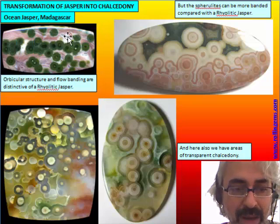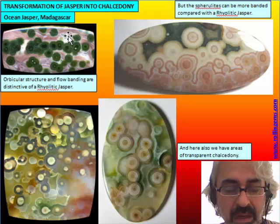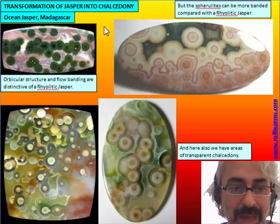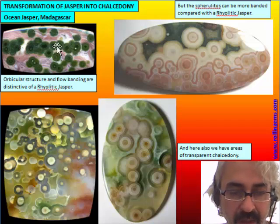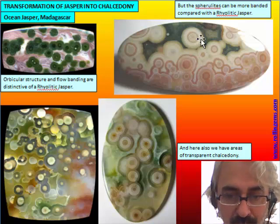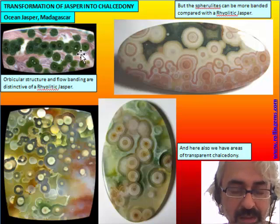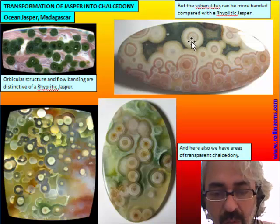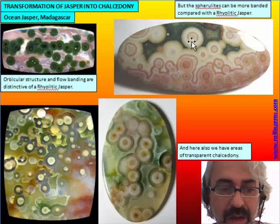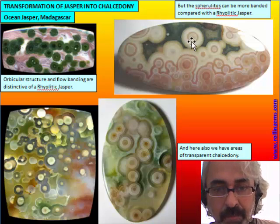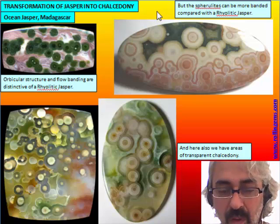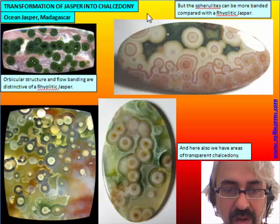The two structures give us the history of its formation from the emplacement of the lava flow and through its devitrification. In some cases the spherulites are more banded, more structured than in normal rhyolitic Jasper. This banding is what makes the difference between rhyolitic Jasper and orbicular Jasper. There are almost just two orbicular Jaspers very well known.